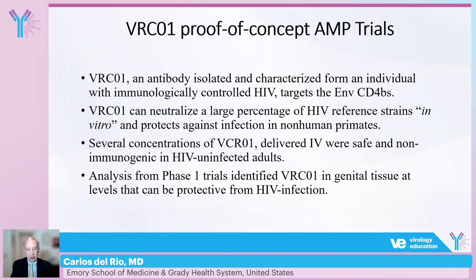The AMP trials were proof-of-concept studies using the VRC01 antibody, which was isolated from an individual with immunologically controlled HIV. It targets the envelope CD4 site, can neutralize a large percentage of HIV reference strains in vitro, and protects against infection in non-human primates. Several concentrations delivered IV have been demonstrated to be safe and non-immunogenic in HIV-uninfected individuals, and phase 1 analysis identified that the monoclonal antibody is present in genital tissues at levels that could be protective.